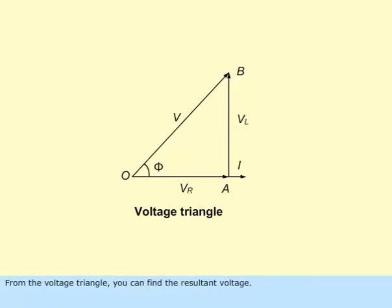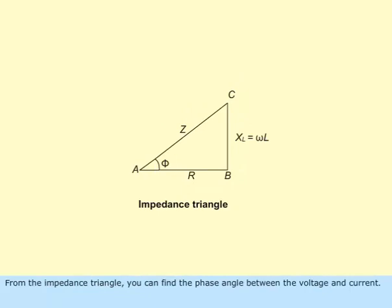From the voltage triangle, you can find the resultant voltage. From the impedance triangle, you can find the phase angle between the voltage and current.